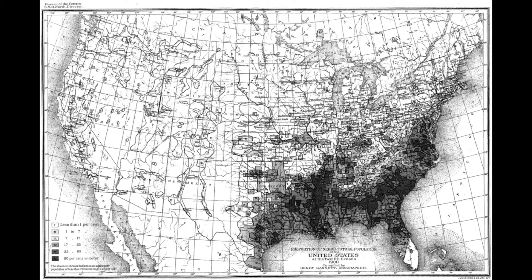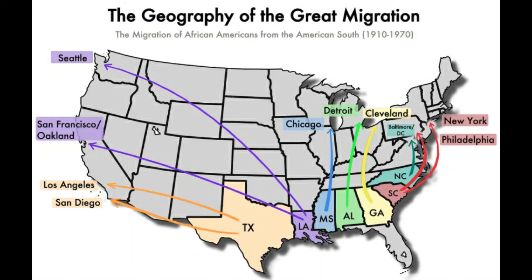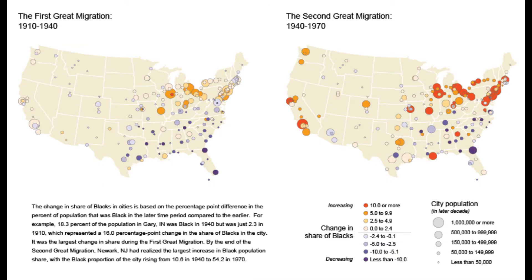First, throughout the beginning of the 20th century, a phenomenon known as the Great Migration was taking place. Millions of Black Americans were moving from the rural South to northern urban centers. In the 1910 census, 90% of all African Americans lived in the South. By 1970, over half of all African Americans were now living in northern and western cities.